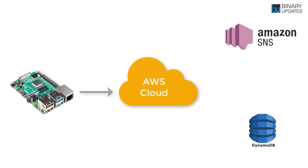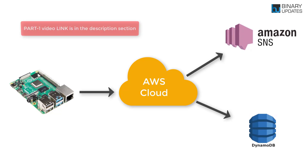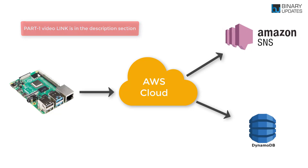Let's learn how to generate email notifications using SNS and store data in DynamoDB on Amazon AWS cloud. This is part two, a follow-up video lesson. In the first part we learned how to send data from Raspberry Pi to AWS IoT Core — the link to the first video is given in the video description.